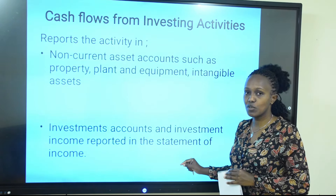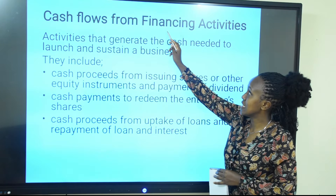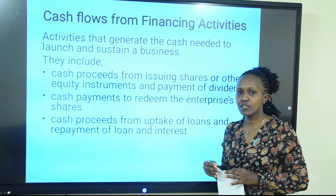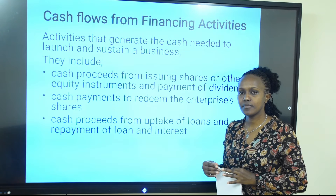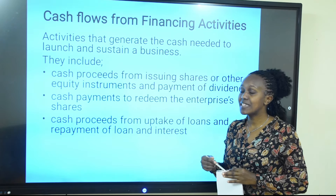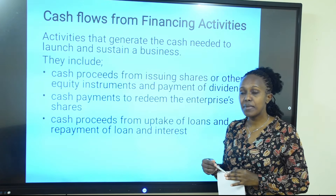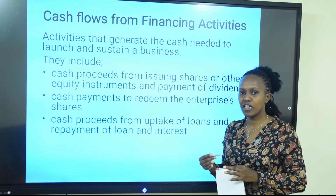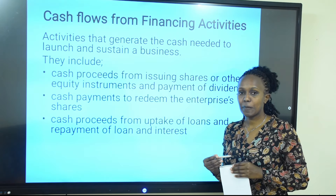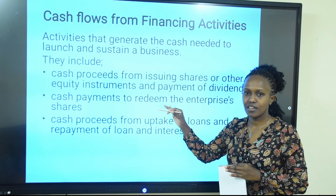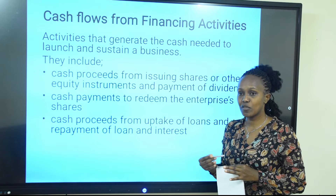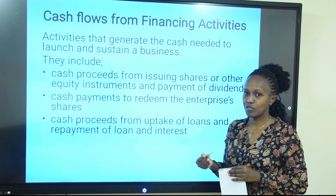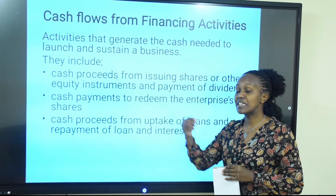The final category is cash flows from financing activities. Every business requires cash to launch and sustain itself. An organization through its board of management decides how to raise money to finance their activities. If it is a public trading company, they may issue shares to the public, inviting members of the public to buy shares. The organization receives money, and those members become shareholders. The inflow is the proceeds received from issuing shares, and the outflow is the dividend paid to shareholders.